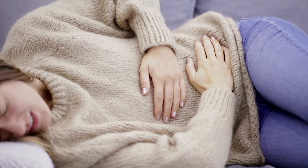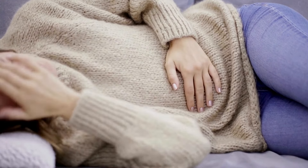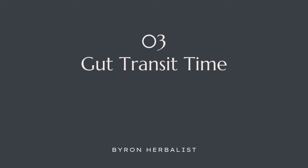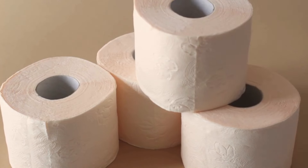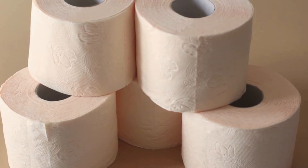The third big piece that can help differentiate between hydrogen and methane dominant SIBO is transit time — how fast things are tracking from your mouth to the toilet bowl. Don't get confused around bowel movements and transit time. New patients might say they have a bowel movement every day so their transit time is 24 hours — they're not closely connected. You can have loose watery bowel movements multiple times a day and still take three, four, five, six days to track from mouth to toilet bowl.